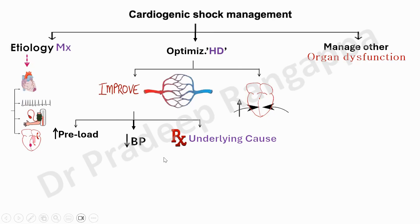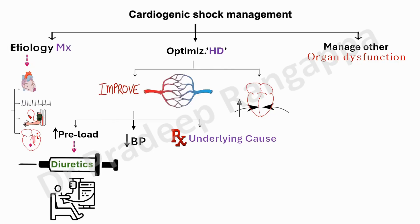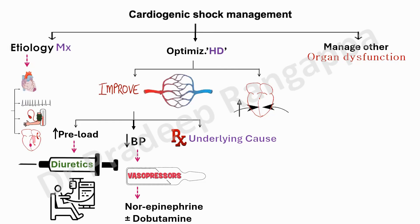If diuretics don't suffice to optimize preload, renal replacement therapy may be needed to remove excess fluid, especially in right heart failure. When there is hypotension, initiate vasopressors — always the choice is norepinephrine. Once the patient is euvolemic and reasonable blood pressure is attained, consider dobutamine, milrinone, or levosimendan as inotropes to improve cardiac contractility and reduce afterload.